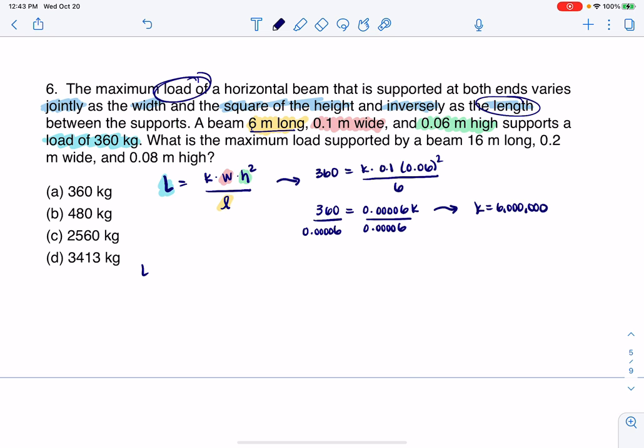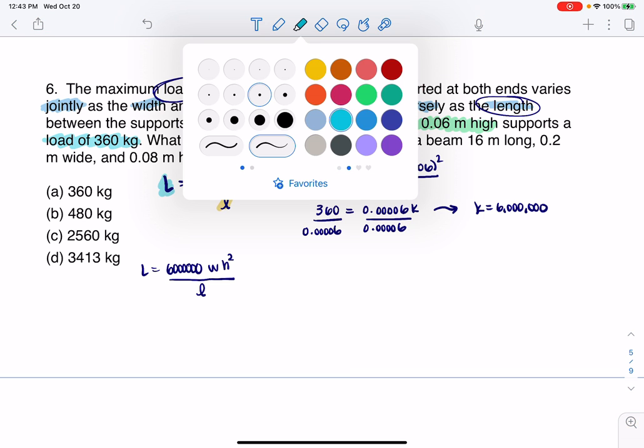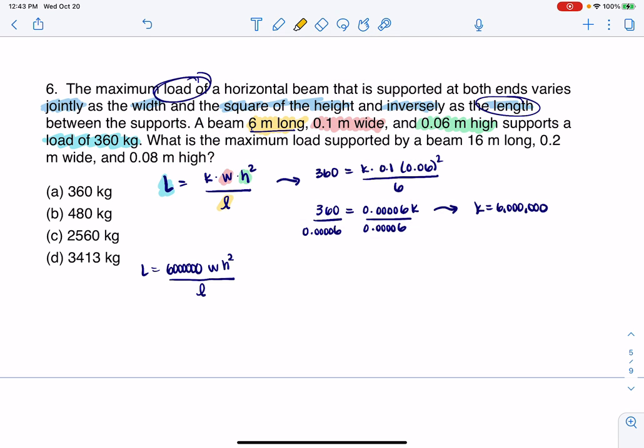So really, my variation equation is L equals 6 million times w h squared over little l, and then let's go figure this out. I'll color code this again. For this next part, I know that this is going to be 16 meters long, I'll put that in there.